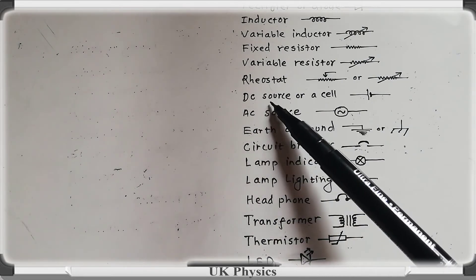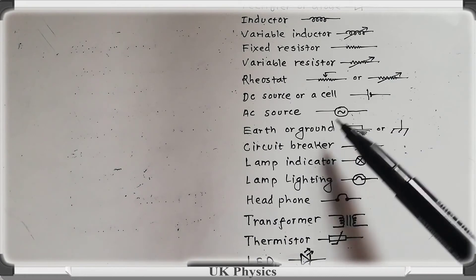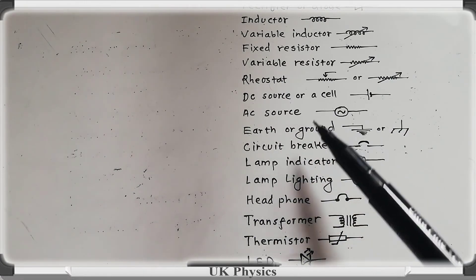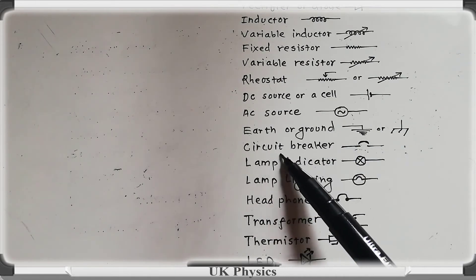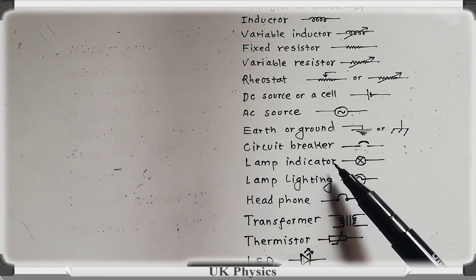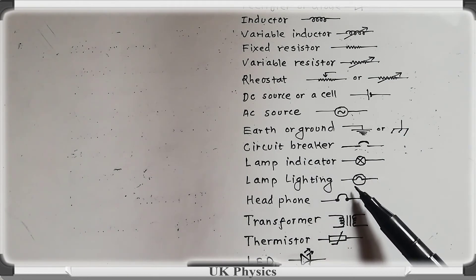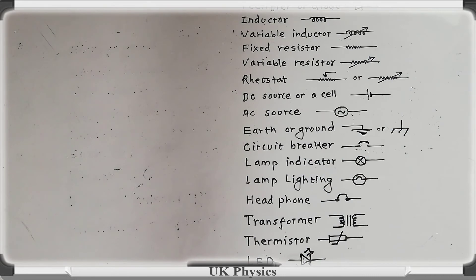This is the DC source — the long line is positive and the short line is negative. This is the circuit symbol of an AC source. This is the circuit symbol of earthing or ground. This is the circuit breaker. This is the lamp indicator, and the indicating lamp is represented by this symbol. This one is a lamp for lighting, and this one is a headphone. This one is a transformer, this one is a thermistor.